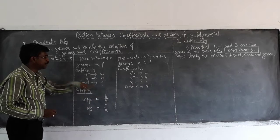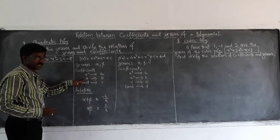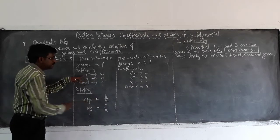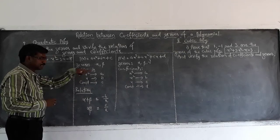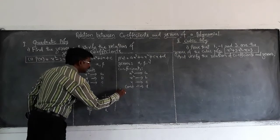So here minus b, b means coefficient of x divided by a. a means coefficient of x square. Similarly there relation.